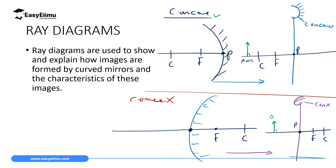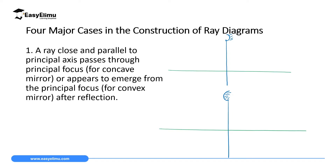When constructing images formed by curved surfaces, we consider four very important rays. The first ray is a ray which is close and parallel to the principal axis — called a paraxial ray. For a concave mirror, this ray will pass through the principal focus F. For a convex mirror, it will appear to have emerged from F, since F for a convex mirror is virtual.